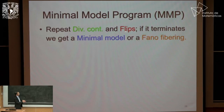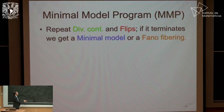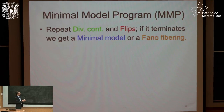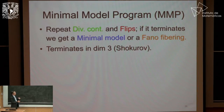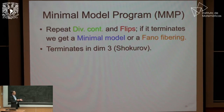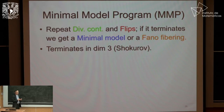So the program says: repeat the divisorial contraction and flip as long as it can. If it terminates, we get a minimal model or a final result, just like in the case of surfaces. So termination of flips is really the central question. In dimension three there is a striking result — he used the classification of terminal singularities and constructed a very sharp numerical invariant from which one can immediately see that termination holds in dimension three. But in higher dimensions it becomes extremely difficult and is still open.